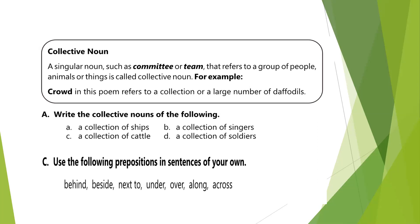Write the collective nouns for the following: a collection of ships is called a fleet (F-L-E-E-T). A collection of cattle is called a herd (H-E-R-D). A collection of singers is called a band (B-A-N-D). A collection of soldiers is called an army (A-R-M-Y).